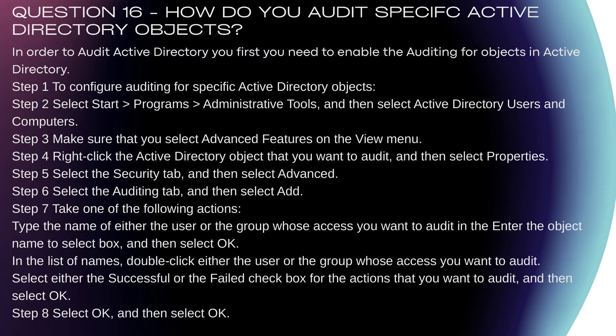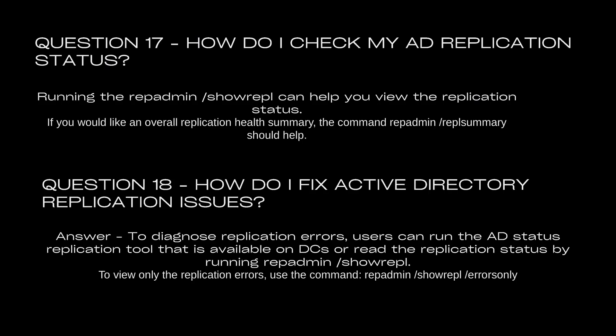Step 7: Type the name of either the user or the group whose access you want to audit in the 'Enter the object name to select' box and then select OK. In the list of names, double-click either the user or the group whose access you want to audit. Select either the Successful or the Failed checkbox for the actions you want to audit, and then select OK. Step 8: Select OK and then select OK.